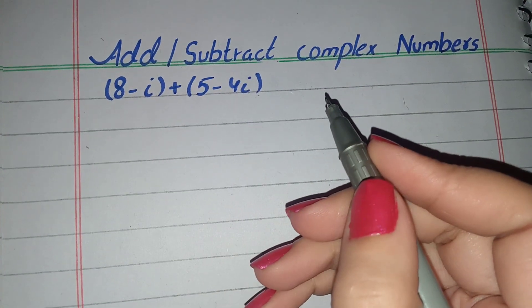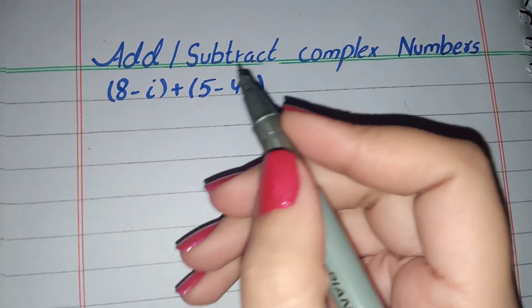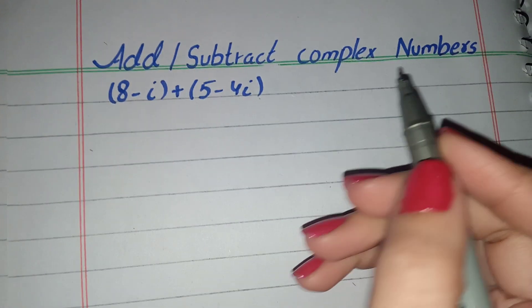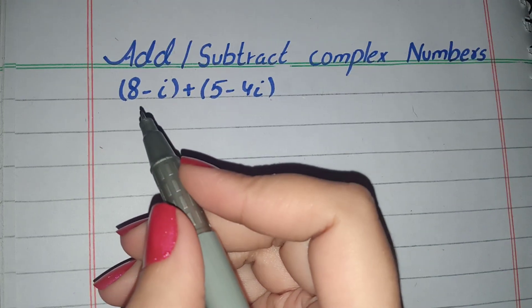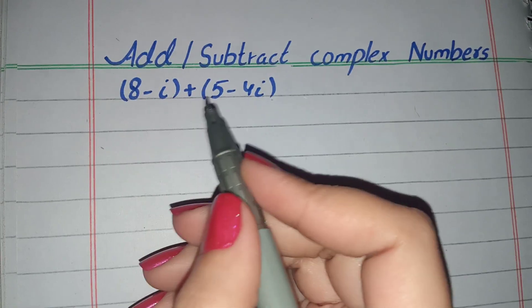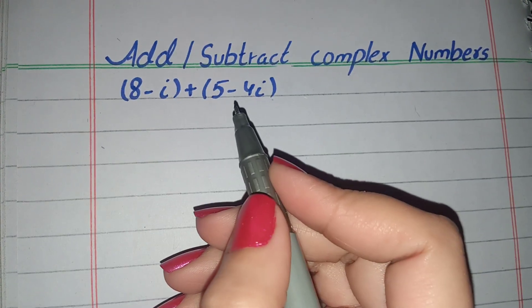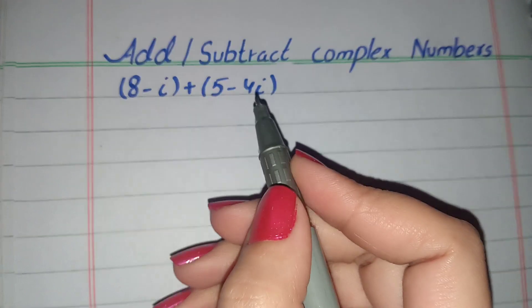Welcome to Math Class Channel. In this video, we will solve this question: add or subtract complex numbers. We have in bracket 8 minus i, plus in other bracket, 5 minus 4i.